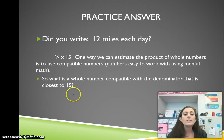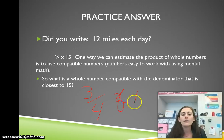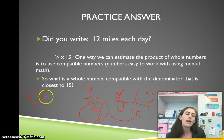So what is a whole number compatible with the denominator that is closest to 15? 15 is our whole number. If we look at our multiples of 4: 4, 8, 12, 16. 16 is very close to 15.